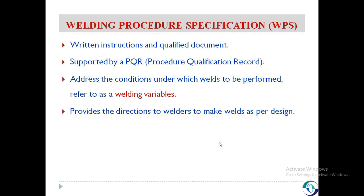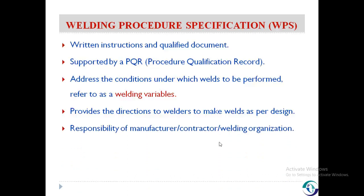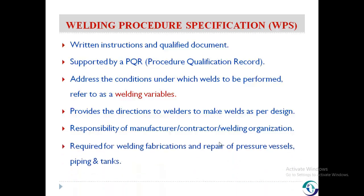When the welder is going to make a weld, it is better to supply a copy of the welding procedure specification to the welder, and the welder should understand the welding variables. It is a responsibility of each manufacturer, each contractor, and each welder organization who has control over the welding activities. It is required for welding fabrications and repair of pressure vessels, piping, and tanks.